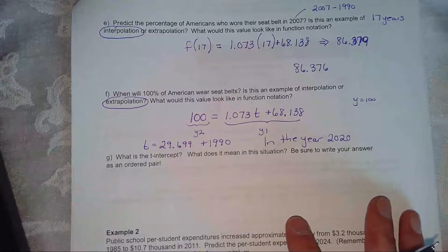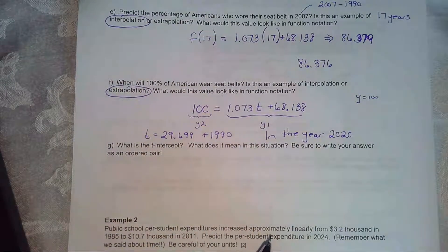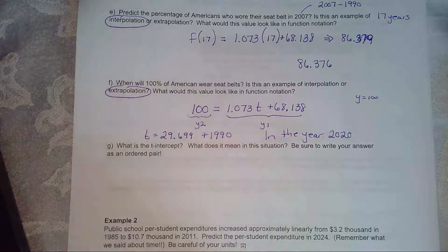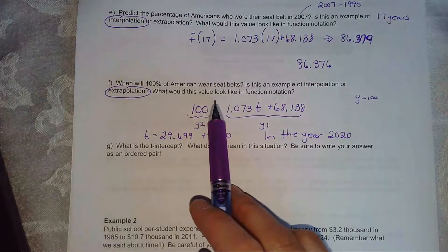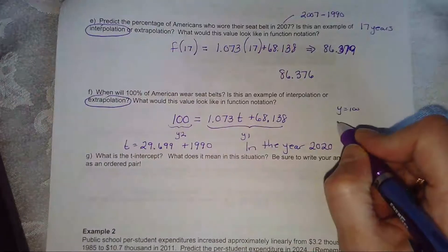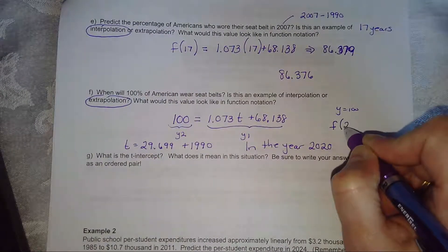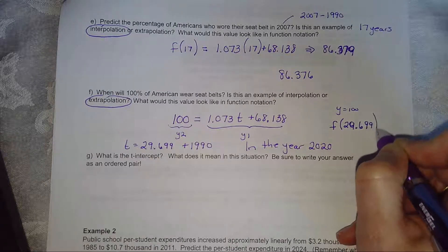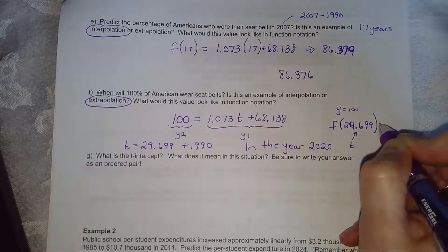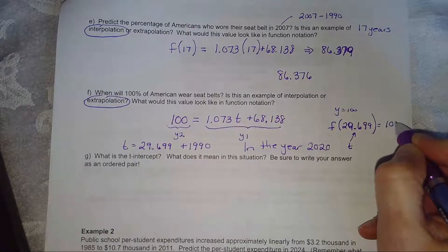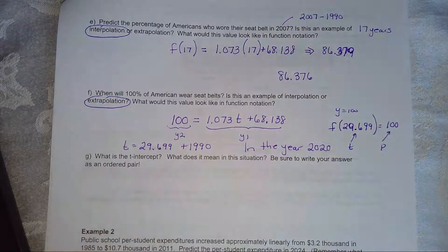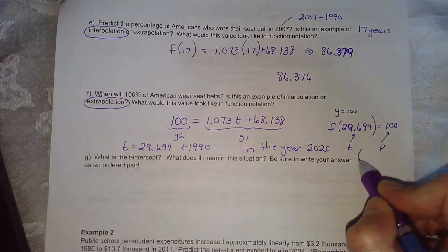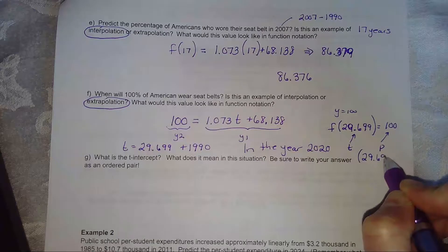This is an example of model breakdown. That probably didn't happen, but we extrapolated. So a lot of the data isn't reliable. And they say, what would this value look like in function notation? So f of 29.699, that was my t value, equals 100. This is my p value. t and p. The ordered pair comes right off of that.